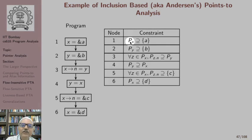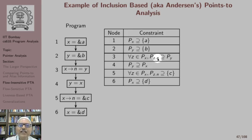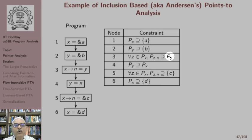These are the constraints. The first constraint says A should be included in the points-to set of x. The second says B should be included in the points-to set of y. The third says that for every points-to z of x — x arrow n means x points to a structure and the n field of that structure is being modified — we pick up the pointees of x, and the n field of those structure variables, because n is a pointer field, is made to include the pointees of y. Similarly, we take the pointee of x, and the n field of the pointee of x is made to include the address of c; here it is made to include the pointees of y. These are the constraints and now we want to solve them one by one.